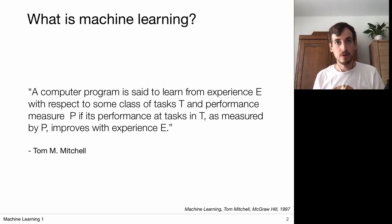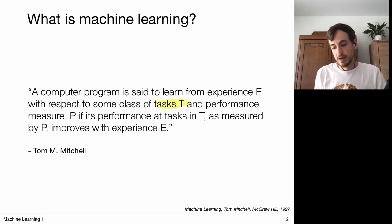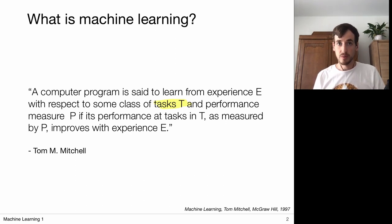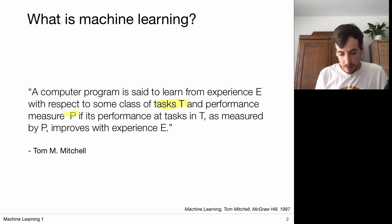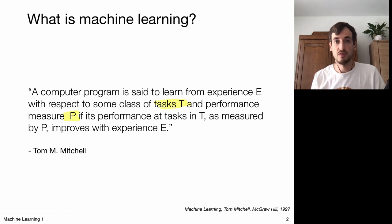First of all, a computer program is designed to perform some task T. We want to automate some process and we call this the task T. Now in the context of machine learning, such an algorithm always comes equipped with a performance measure P. This performance measure P is a way of quantifying how well the algorithm is doing its job, and basically we want to optimize this performance measure.